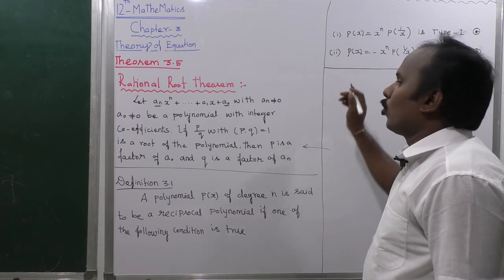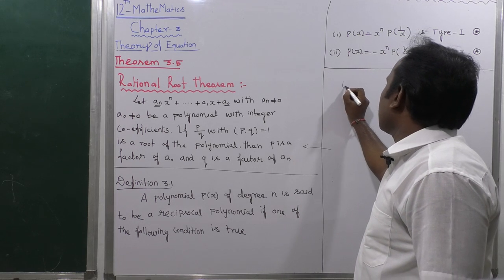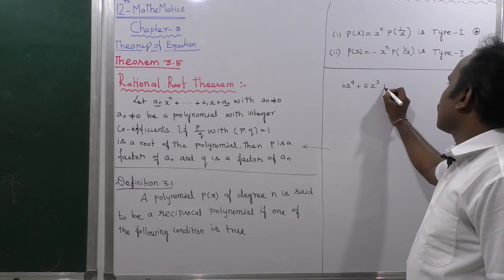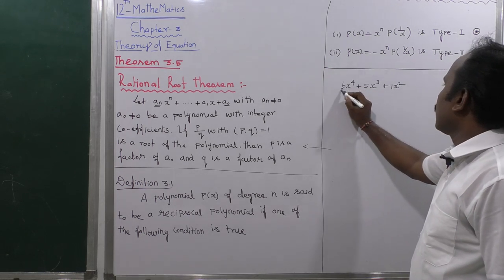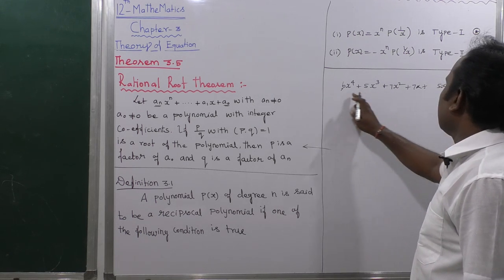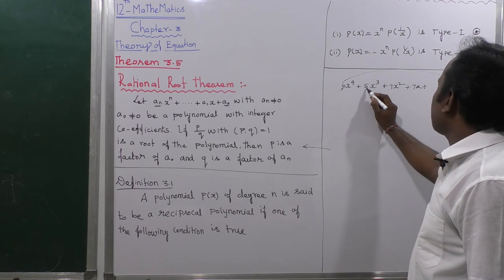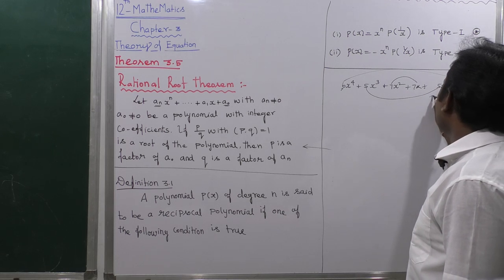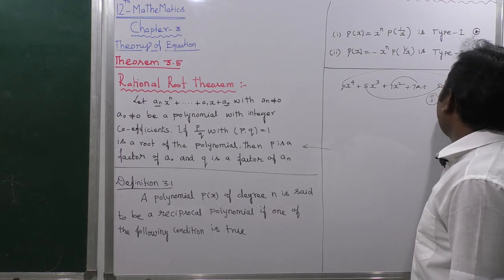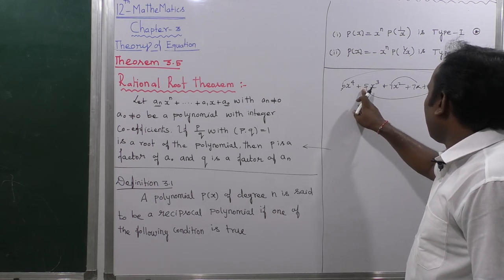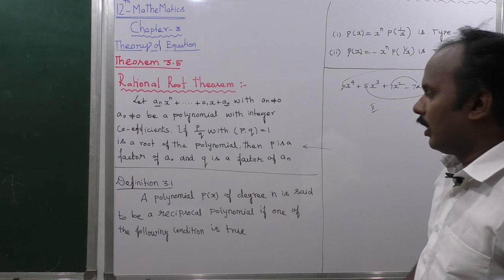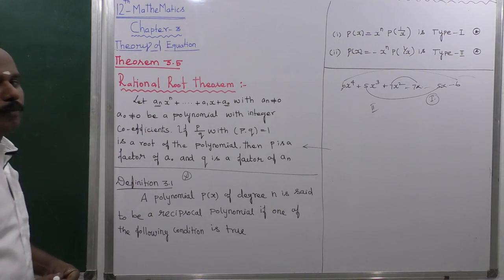For Type 1, the coefficients are symmetric: for example, 6x⁴ + 5x³ + 7x² + 5x + 6. The first number 6 equals the last number 6, the second number 5 equals the second-to-last 5, and the center number 7 is the same. For Type 2, the coefficients are anti-symmetric: for example, +6 and -6, +5 and -5. These are called reciprocal equations, and that is Definition 3.1.